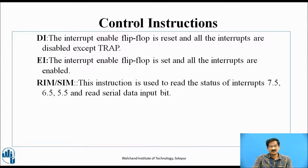DI: The interrupt enable flip-flop is reset and all interrupts are disabled except TRAP. EI: Enable interrupt — all flip-flops are set by executing this instruction. RIM/SIM: This instruction is used to read the status of interrupts 7.5, 6.5, 5.5 and to read the serial data input bit.